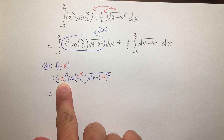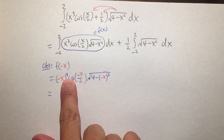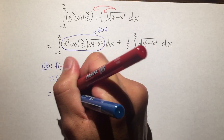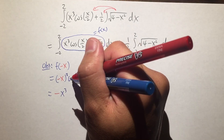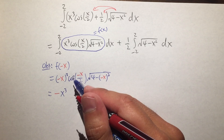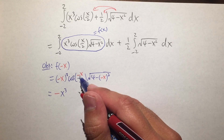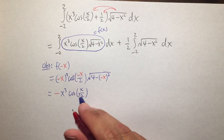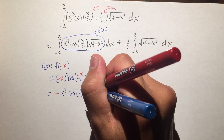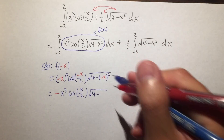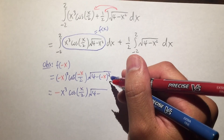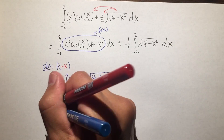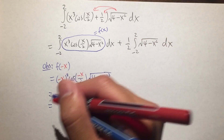Here we have negative 1 times x to the third power, and negative 1 to the third power is still negative 1, so we write this as negative x to the third power. Cosine is an even function, so we can ignore the negative and just say cosine of x over 2. Then the square root of 4 minus negative x squared — since negative 1 squared is positive 1 — is just the square root of 4 minus x squared, the same as before.